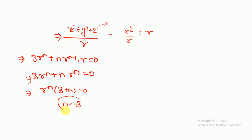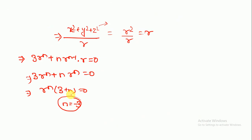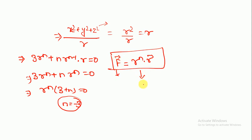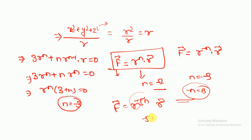So n equals minus three. For solving such problems quickly, remember this expression: if vector F = r^n · vector r is solenoidal, then n = -3. If the exam frames it as r^(-n) · vector r, then -n = -3 so n = 3. Similarly, if given r^(-5n) · vector r, then -5n = -3 so n = 3/5. You can compensate like this without re-solving all steps.